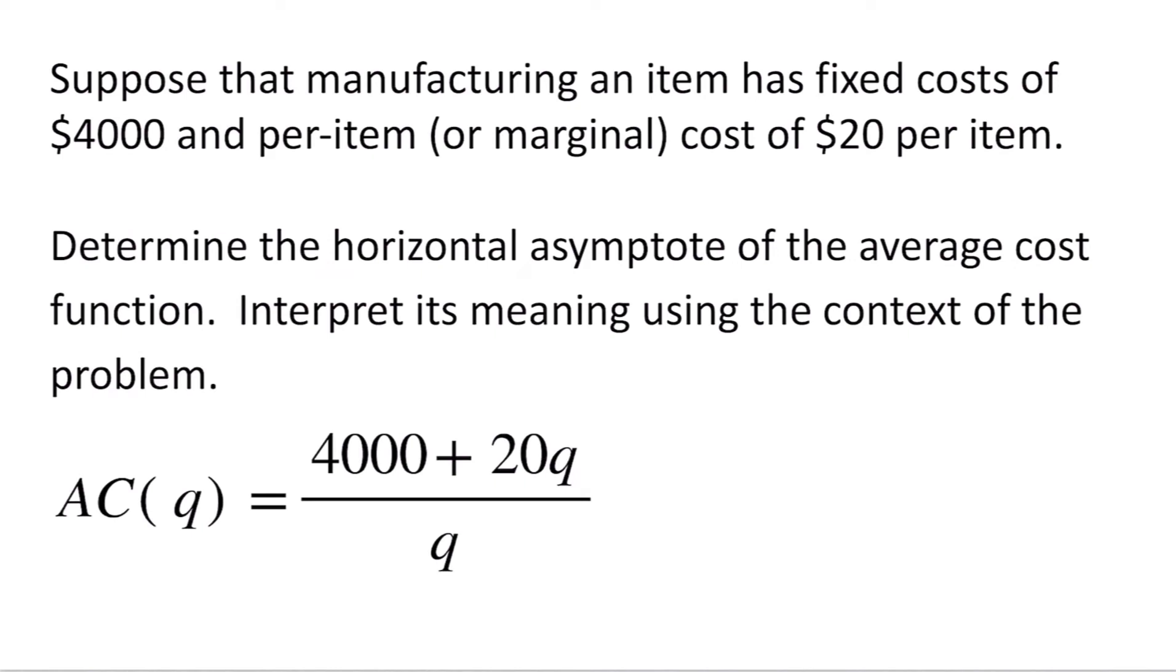Now that we have our average cost function, let's determine the horizontal asymptote for the average cost function and then interpret its meaning using the context of the problem. When we're finding the horizontal asymptote, we want to look at the degree of the polynomial in the numerator and the degree of the polynomial in the denominator.